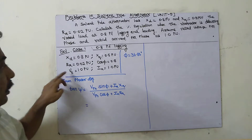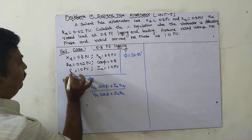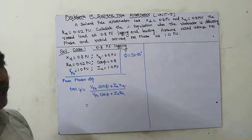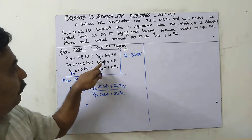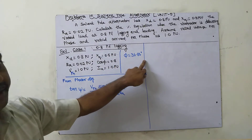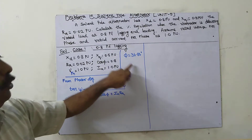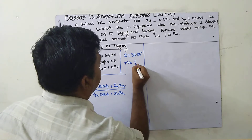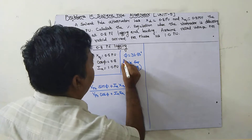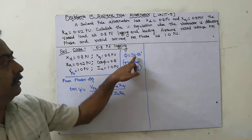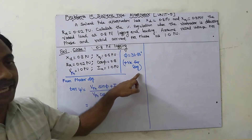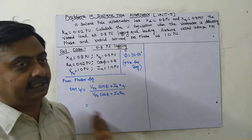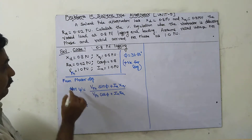V_phase = 1 per unit, armature current Ia = 1 per unit — all are phase quantities. The phi value: if cos φ = 0.8, then φ = 36.86°. This 36.86° should be positive for lagging power factor. For leading power factor, phi will be taken as negative.